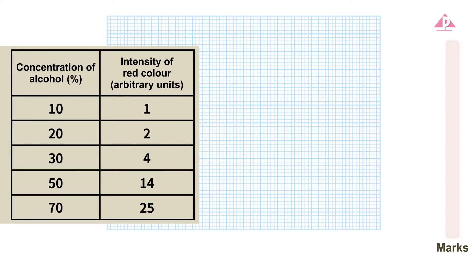We can then write the title based on the independent and dependent variables. A common format of the title is 'the dependent variable in different independent variable.' We can write 'the permeability of the cell membrane in different concentrations of alcohol' as the title of this graph.